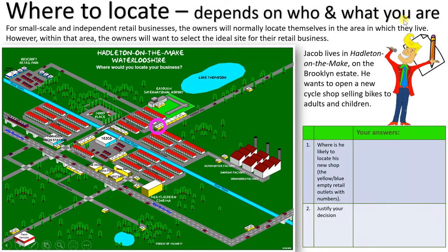Where to locate depends on who and what you are. For small-scale and independent retail businesses, owners will normally locate themselves in the area where they live. However, within that area, the owner will want to select the ideal site. Here's Task 2: Jacob lives in Haddleton-on-the-Make on the Brooklyn Estate — that's the pink circle on the map. He wants to open a new cycle shop selling bikes to adults and children. Complete the table based on Jacob and his new cycle shop.